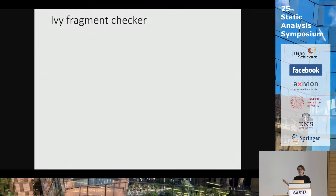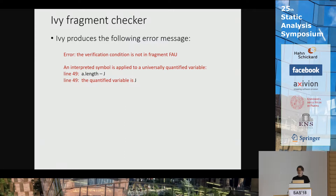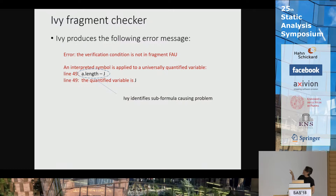On the other hand, if I put this program into Ivy, it wouldn't even run Z3. Instead it would give me this error message: 'The verification condition is not in the fragment FAU.' FAU is a fragment of the logic for which Z3 is a decision procedure. It also says 'an interpreted symbol is applied to a universally quantified variable,' pointing to an expression 'length minus J' — subtraction is the interpreted symbol, J is the universally quantified variable. It's saying this is a problem for decidability, you need to fix this. Now I have actionable feedback.